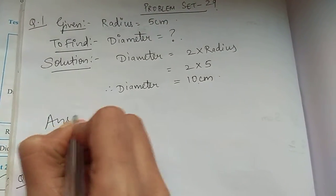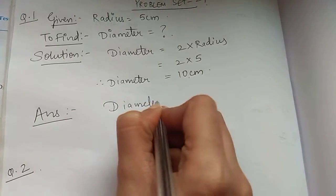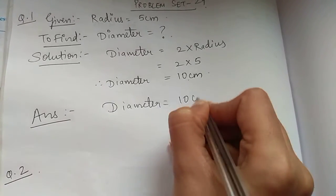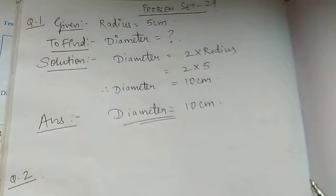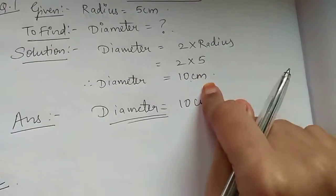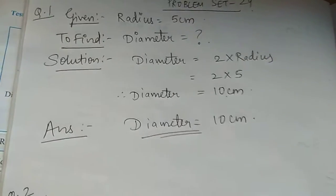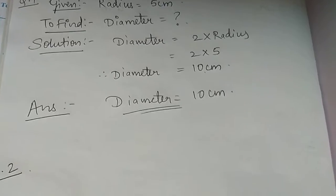In answer, we will write diameter equal to 10 cm. This is how we will be solving this. Whatever is being asked, we will write the formula first, then we will apply, we will put in the values and we will get the answer. Question number 2.